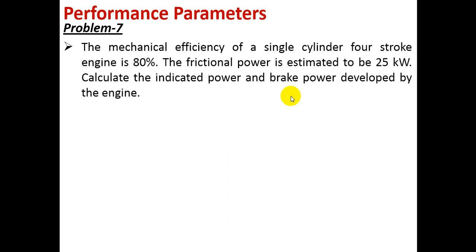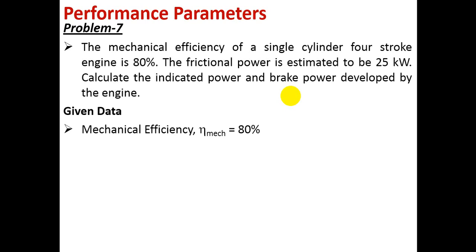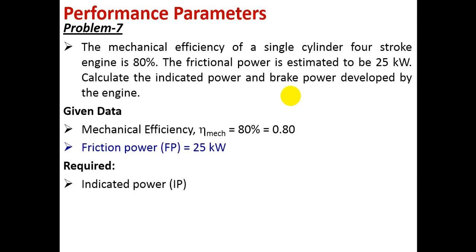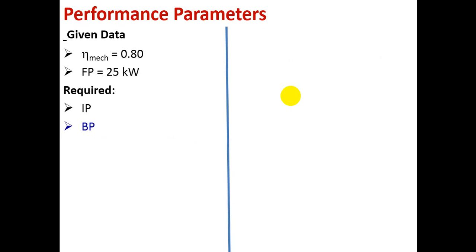Let us do the next problem. The mechanical efficiency of a single cylinder four-stroke engine is 80 percent. The frictional power is estimated to be 25 kilowatt. Calculate the indicated power and the brake power developed by the engine. Given data: mechanical efficiency equals 80 percent, converted to fraction it is 0.8. Friction power FP equals 25 kilowatt. Required: indicated power IP and brake power BP.